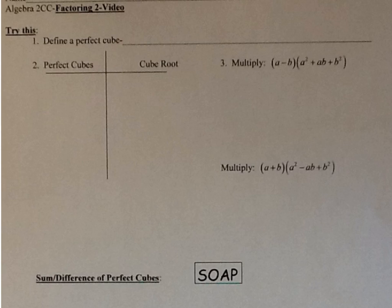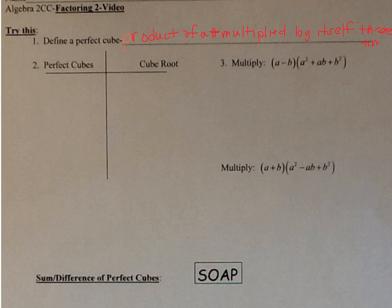A perfect cube comes from the product of a number multiplied by itself 3 times. Let's make a list of perfect cubes, starting with 1. 1 times 1 times 1 is 1, so 1 is a perfect cube. The cube root — written with a little 3 inside the check mark, called the index — of 1 is 1, because we're asking what number multiplied by itself 3 times gives me 1.